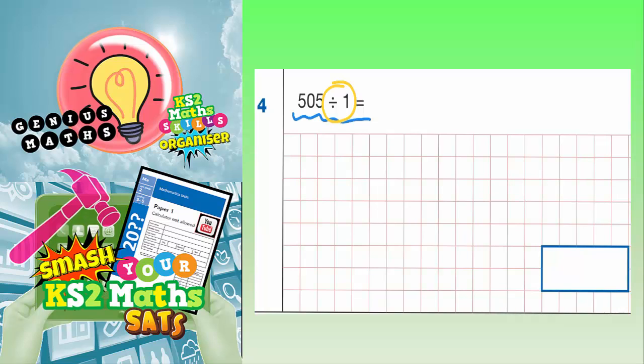So, 642 divided by 1 is 642, and 17,498 divided by 1 would be 17,498. So, 505 divided by 1 is going to be 505.